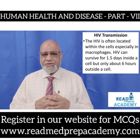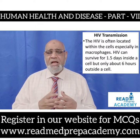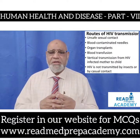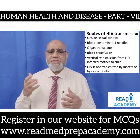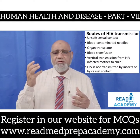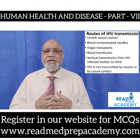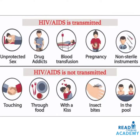The routes of HIV transmission include unsafe sexual contact, blood-contaminated needles, organ transplants, blood transfusion, and vertical transmission from an HIV-infected mother to the child through the placenta. HIV is not transmitted by insects or by casual contact. HIV is transmitted through unprotected sex, drug addiction, blood transfusion, pregnancy from mother to child, and non-sterile instruments. HIV is not transmitted through touching such as handshakes, through food, kissing, insect bites, or through water.